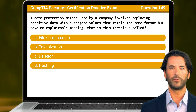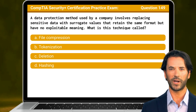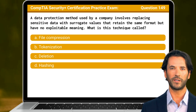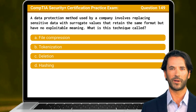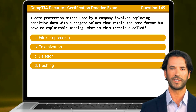Question 149. A data protection method used by a company involves replacing sensitive data with surrogate values that retain the same format but have no exploitable meaning. What is this technique called?